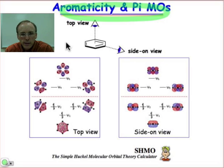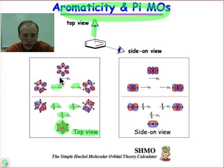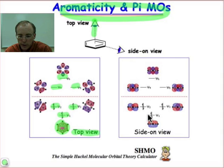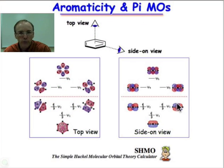Here you see the pi system of benzene. On the left, you see the top view, where your eye is positioned above the ring, so you can see the six atoms of the benzene ring and the six different pi molecular orbitals. From the side-on view, where our eye is positioned toward the edge of the planar ring, we can see the plane of the benzene ring in those same six pi molecular orbital systems, and we can see the nodal plane there very clearly.